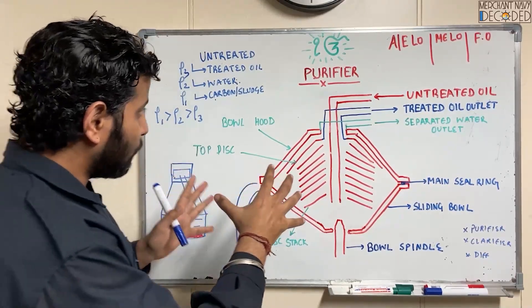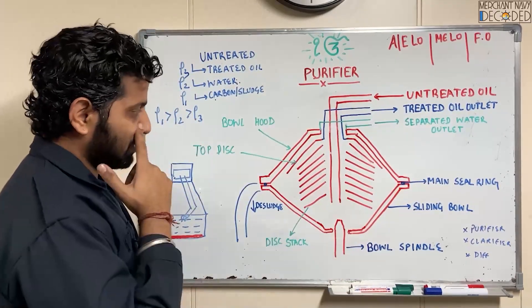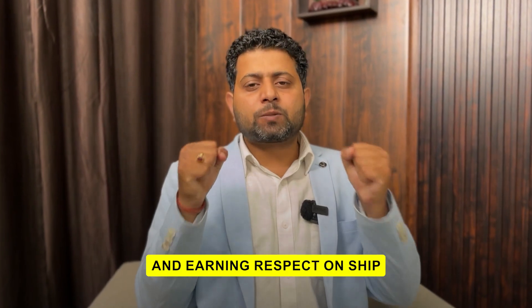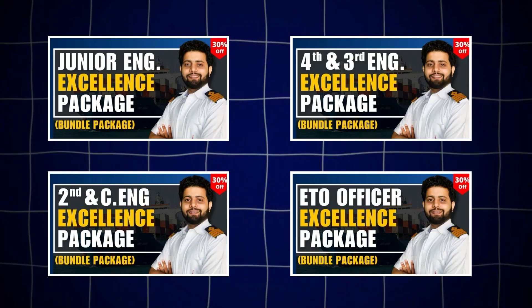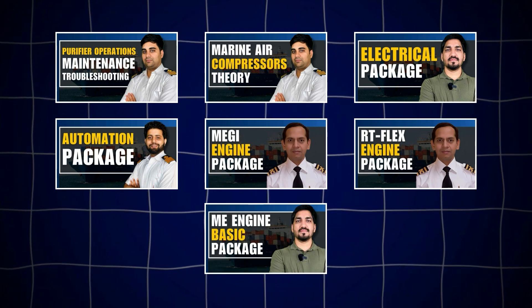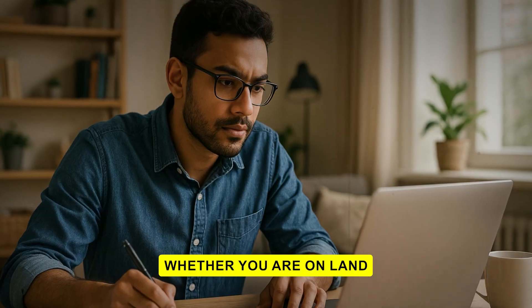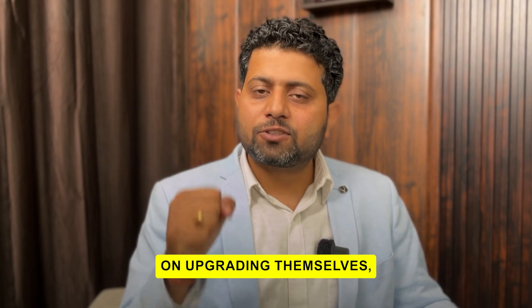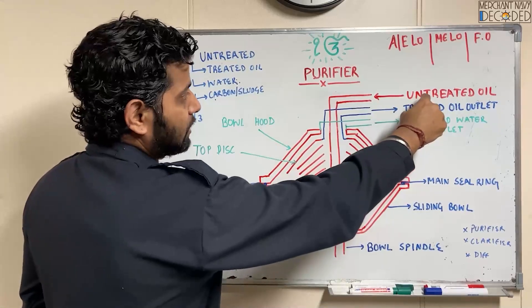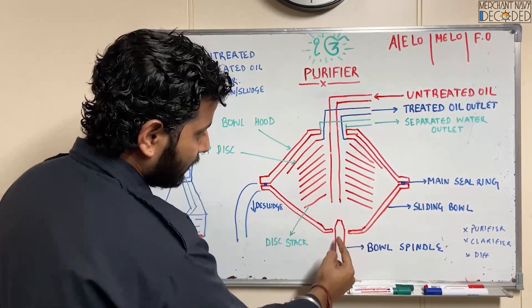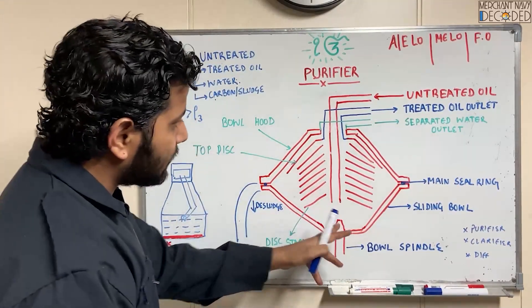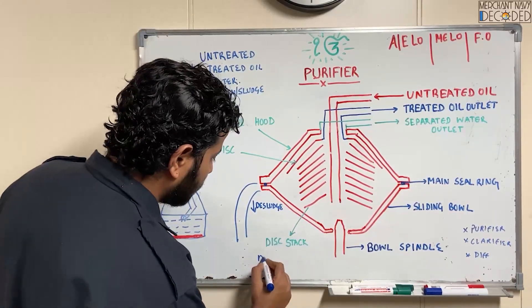I have drawn a layout of a purifier. This is the untreated oil coming in. This is the spindle on which this complete bowl is sitting. Basically, a centrifugal force will act on whatever oil is coming in. The centrifugal force is M × R × Omega squared.